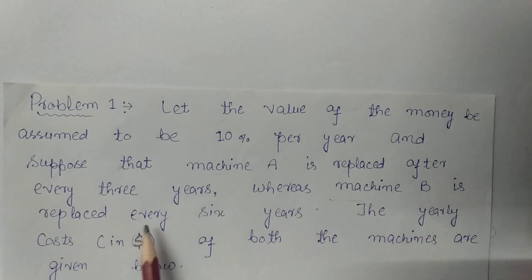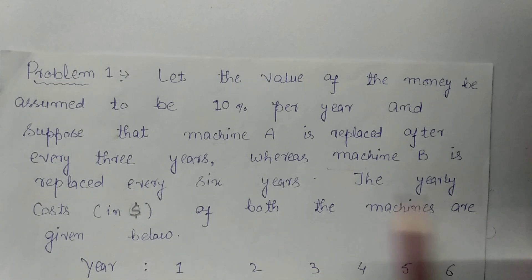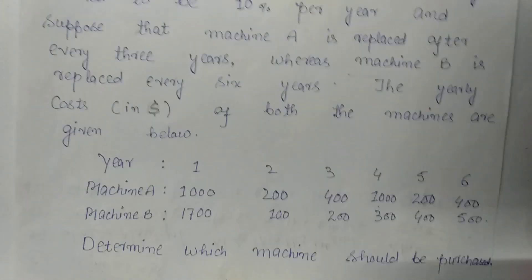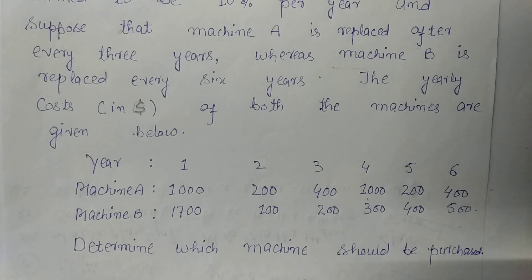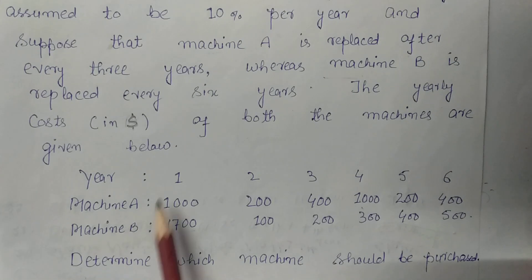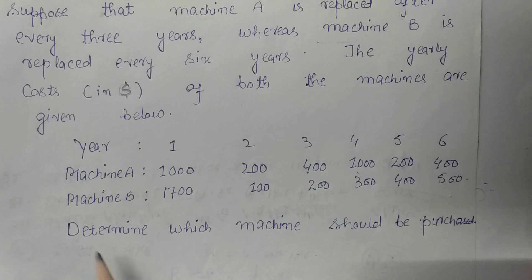Machine A is replaced after every 3 years and machine B is replaced after every 6 years. The yearly cost in dollars of both machines are given below. The number of years considered is 6 years. Now we have to determine which machine should be purchased.